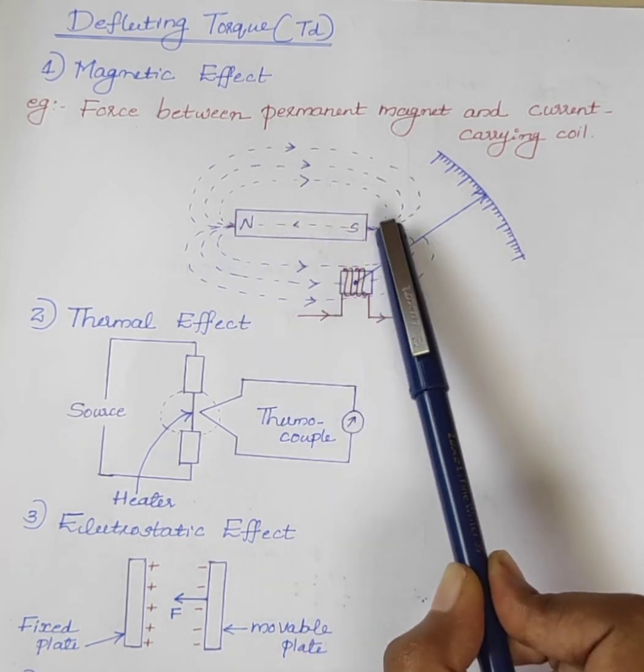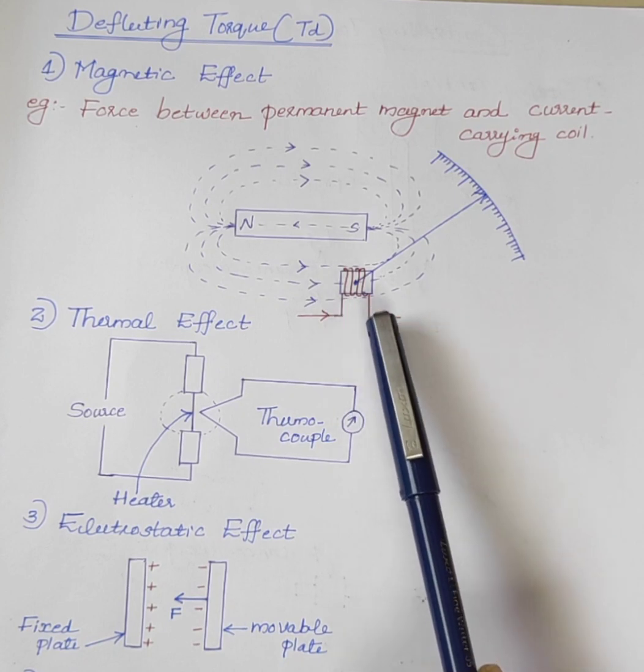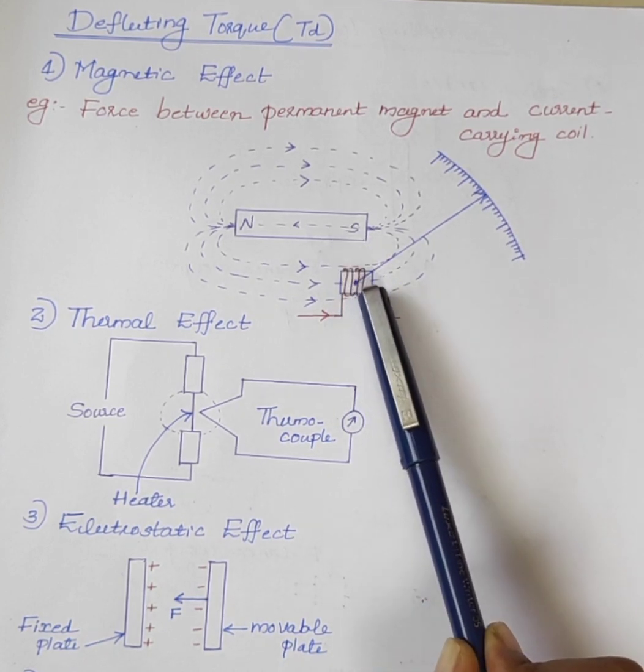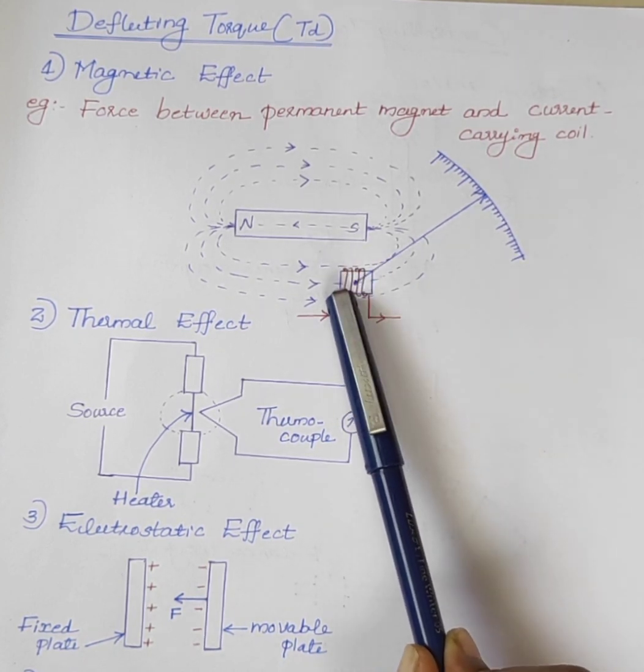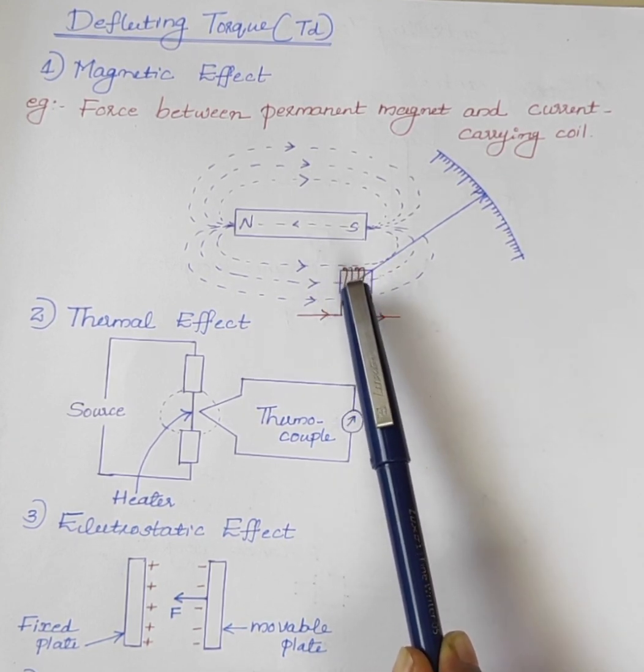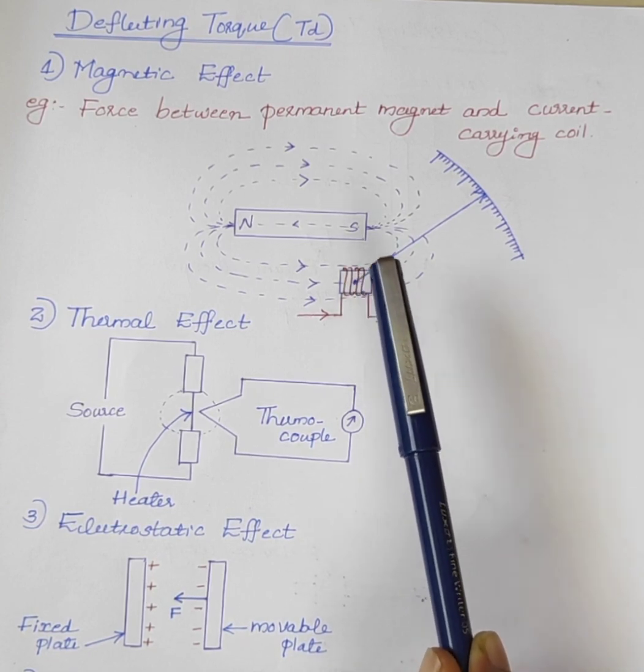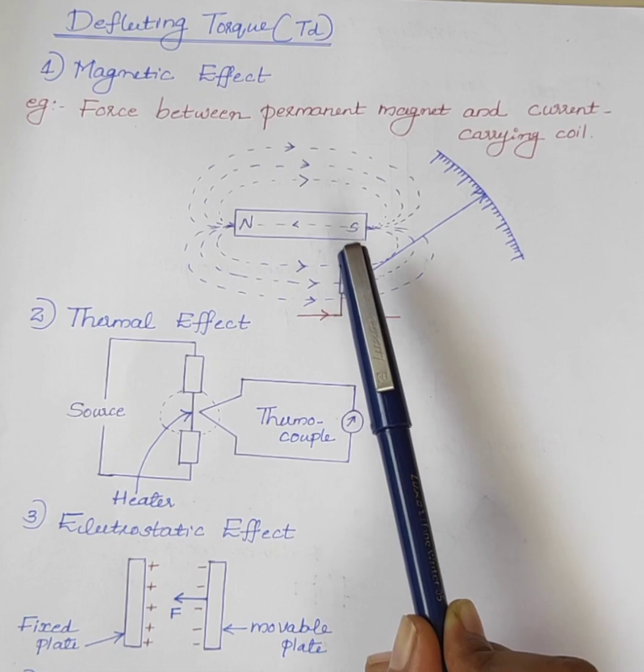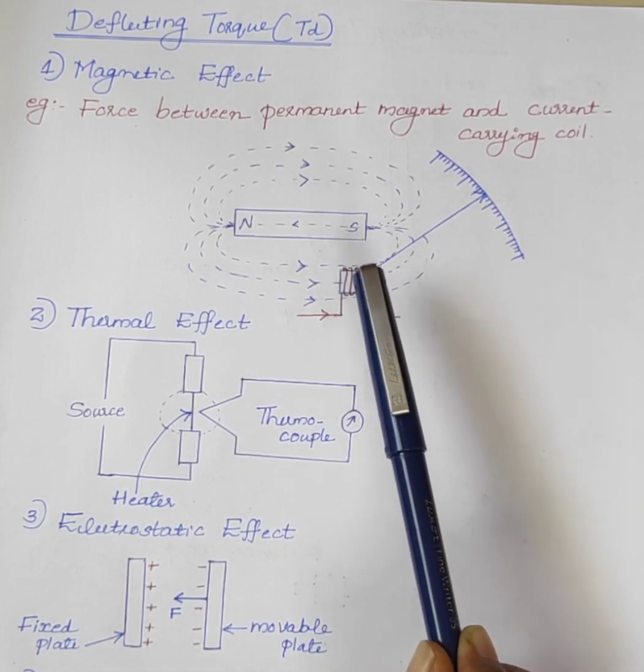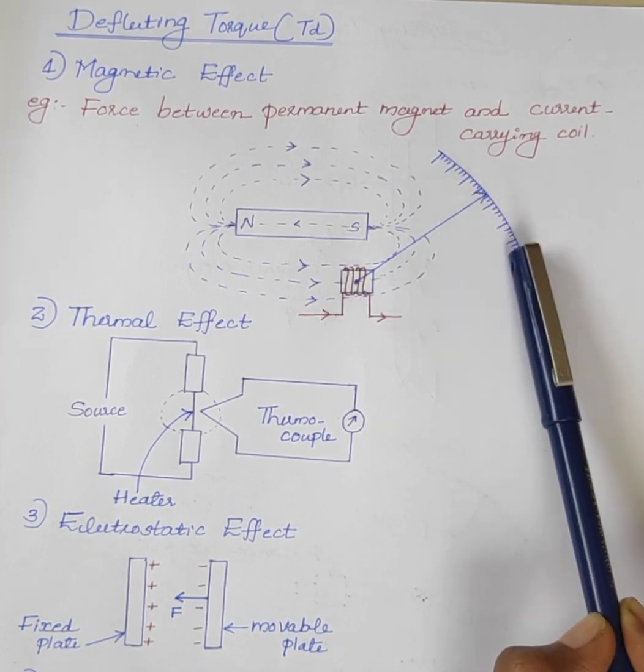When a permanent magnet is brought near it, there will be either a force of attraction or repulsion. If the coil is mounted on the moving system of the indicating instrument, there will be a movement of the coil. Thereby the moving system also moves in the direction of the coil movement, and the pointer moves accordingly.